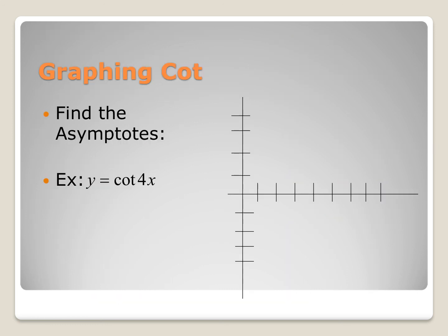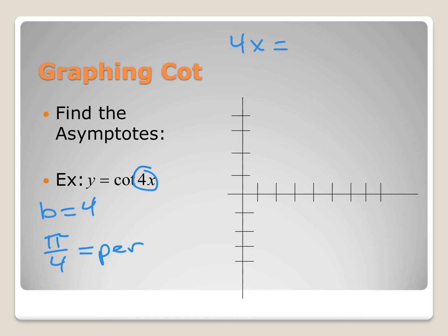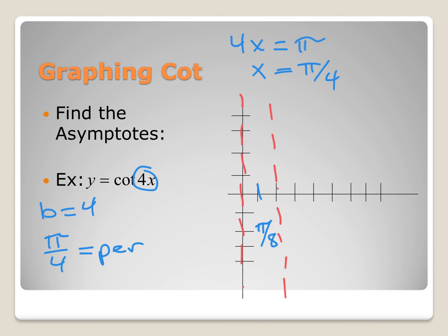For the cotangent example cot(4x): we identify b equals 4. The normal period pi divided by b gives a new period of pi over 4, which tells us the distance between asymptotes. The first asymptote is at 0, and the second one: taking 4x and setting it equal to pi, then solving gives x equals pi over 4. So we still have the asymptote at 0 and the new one at pi over 4. With tick marks at pi over 8, the next asymptote lands at pi over 4. The distance from 0 to pi over 4 is pi over 4, confirming the correct asymptotes.